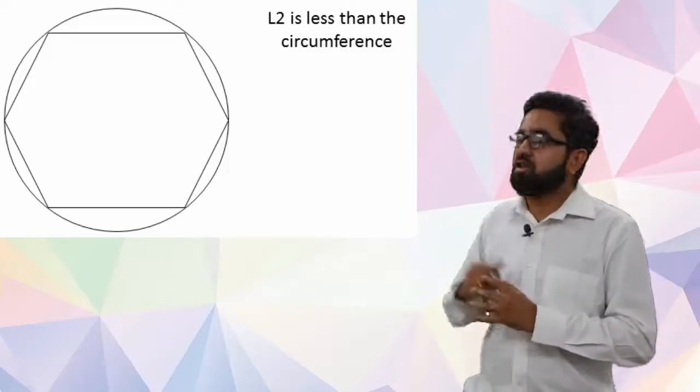So using these two things, what we can say is L1 is always greater than 2πR. Here R is 1, so 2π. 2π is always greater than L2 for any value of n.